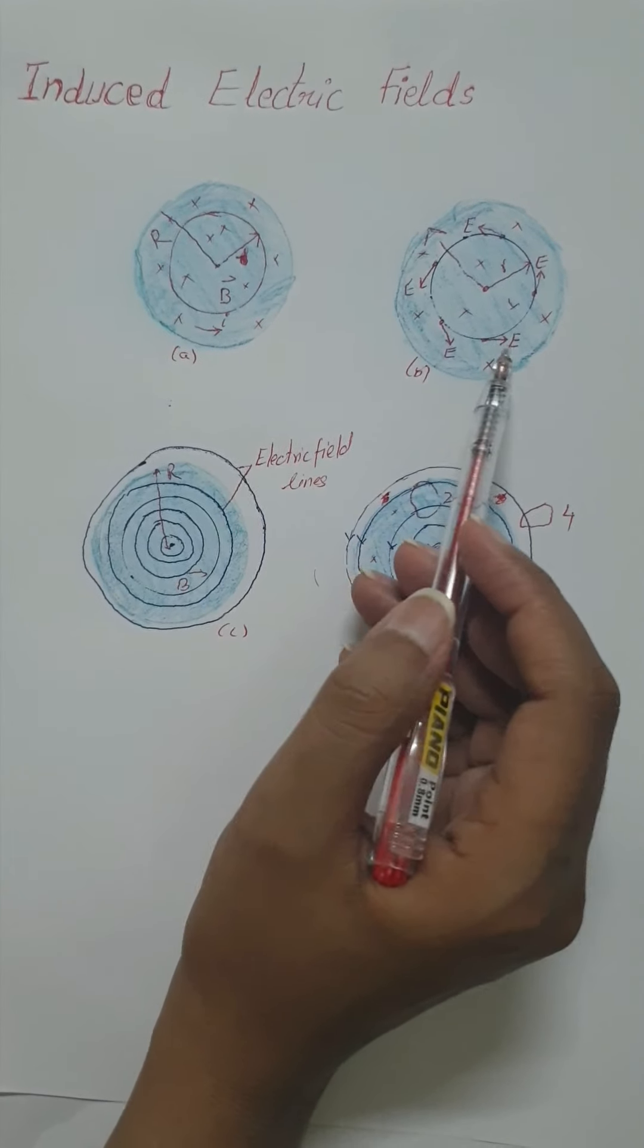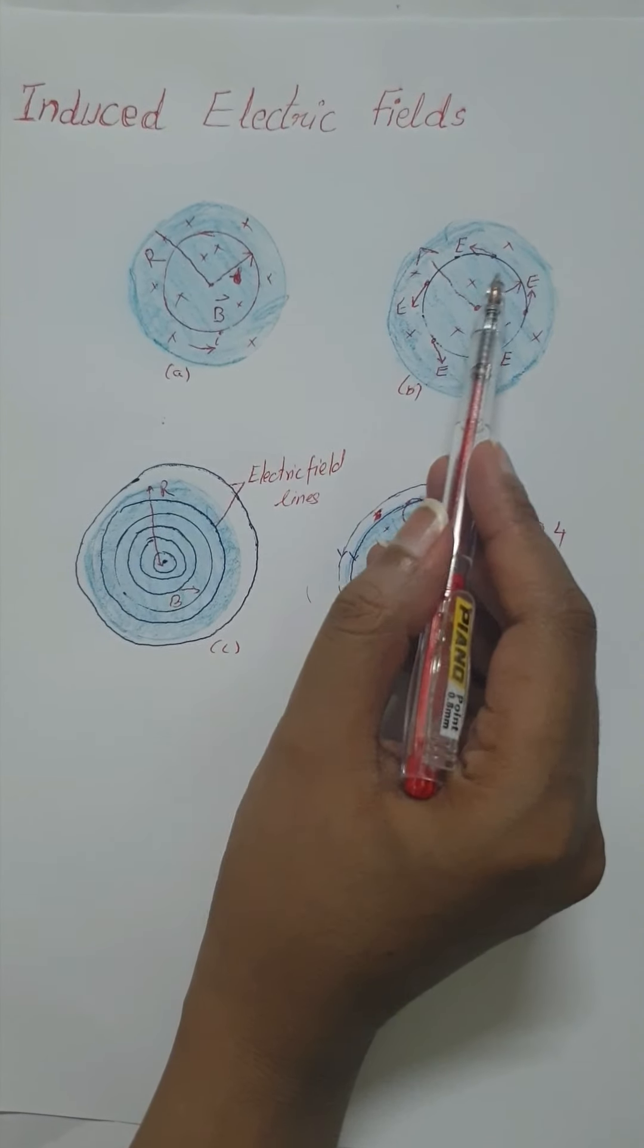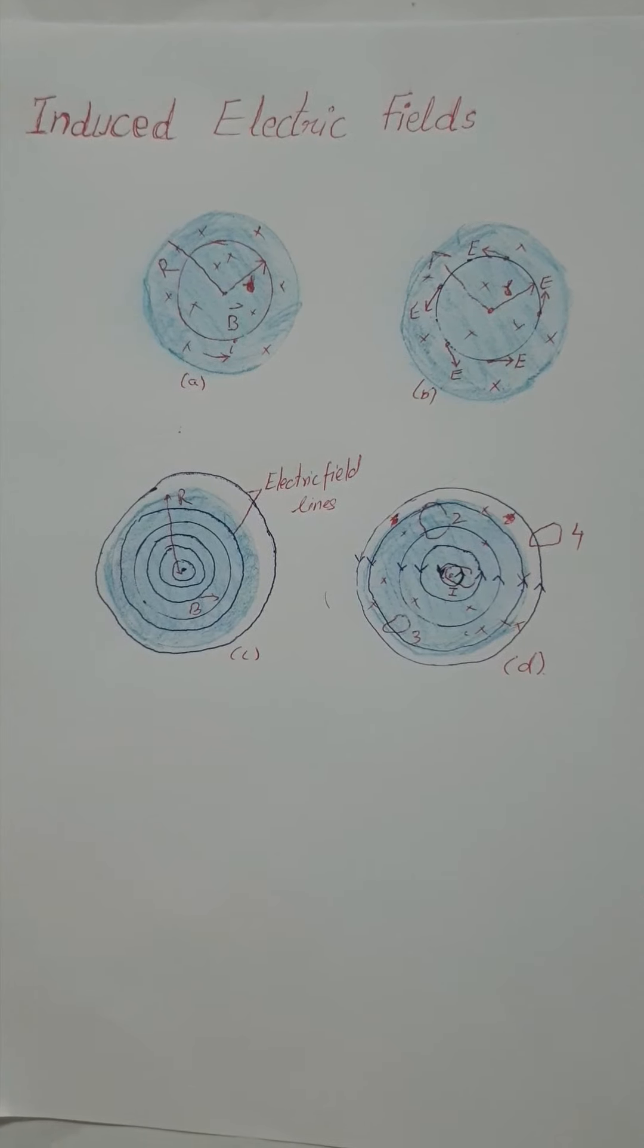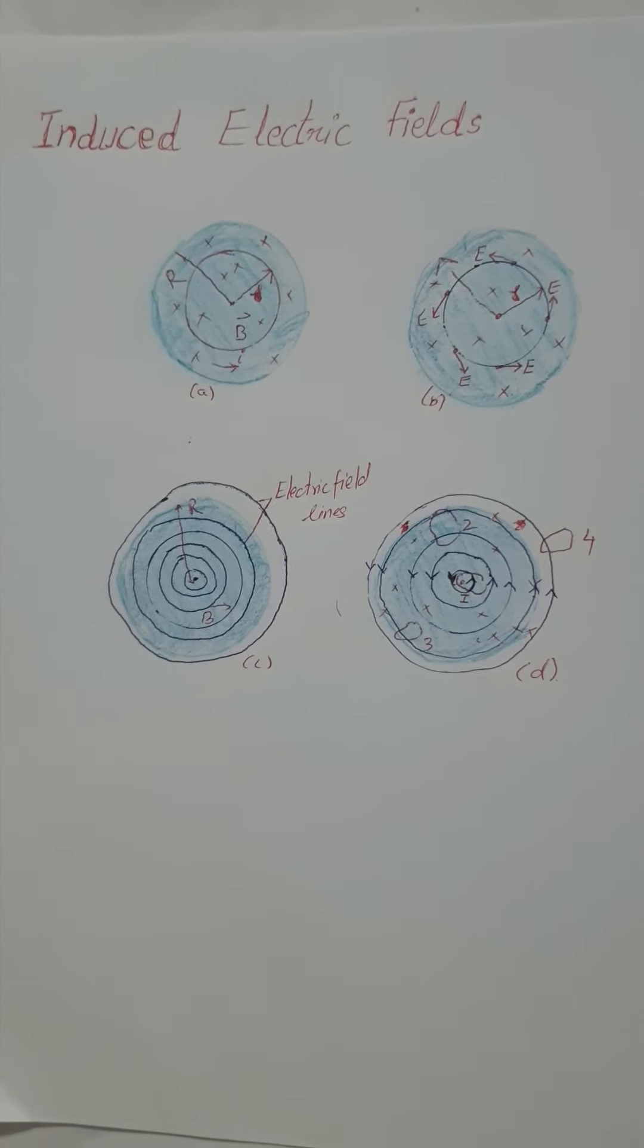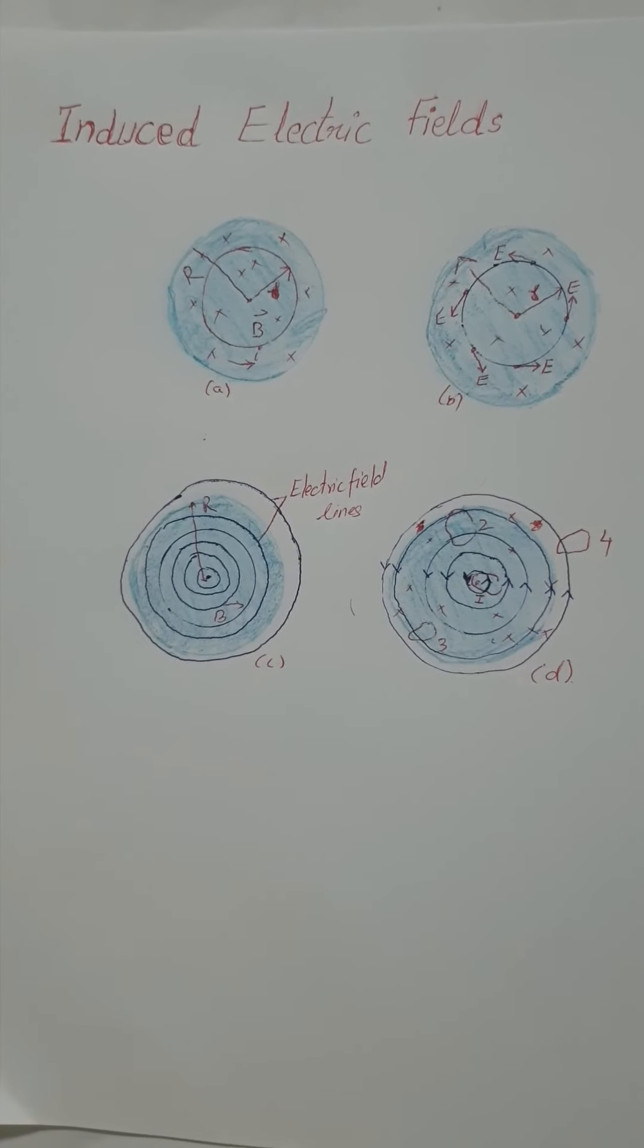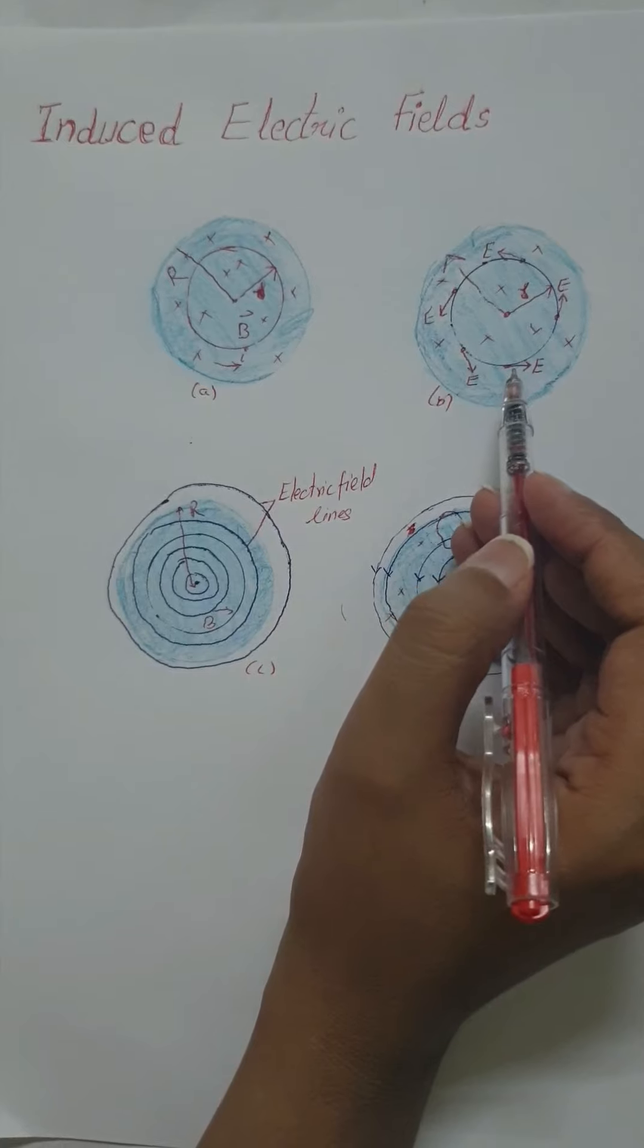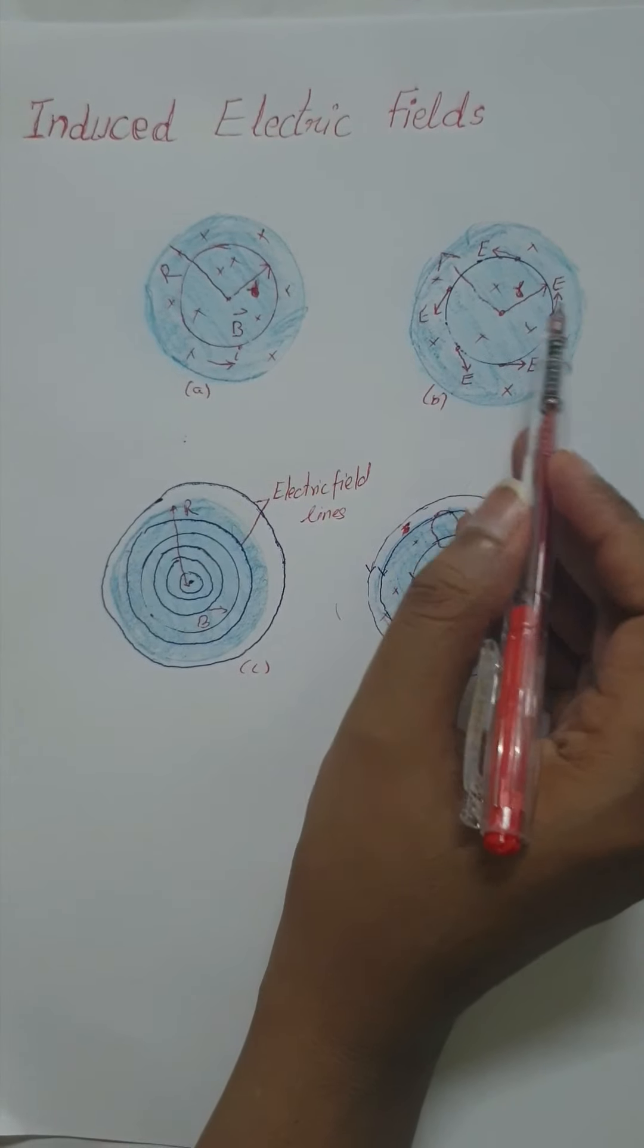For example in this case, the copper ring has been replaced by some hypothetical circular path of radius R. We assume that the magnetic field B is increasing in magnitude at a constant rate dB over dt, and the electric field induced at various points around the loop, around the circular path, is tangent to the circle. So the circular path here is an electric field line.